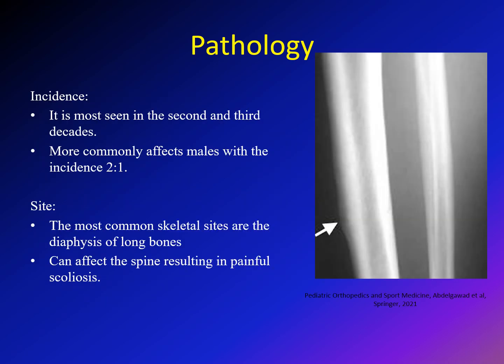Osteoid osteoma is most commonly seen in the second and third decades, which is why pediatricians can encounter this condition. It is more common in males with a ratio of two to one. Regarding the site, it commonly affects the diaphysis of the bone, and sometimes affects the spine, resulting in painful sclerosis. Here you can see obvious sclerosis of the tibia compared to above and below, which is the reaction of the host bone to the osteoid osteoma.